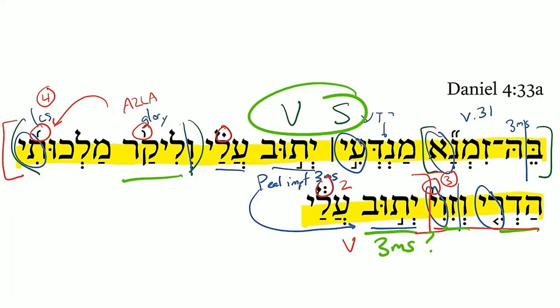If we look at Biblical Aramaic for Biblical Interpreters, page 35, we see situations that look like compound subjects. Often, the subject-verb agreement will actually be with the first item in the list, rather than with all the items resulting in a plural. So those are just a few notes to figure out why we have a singular verb.